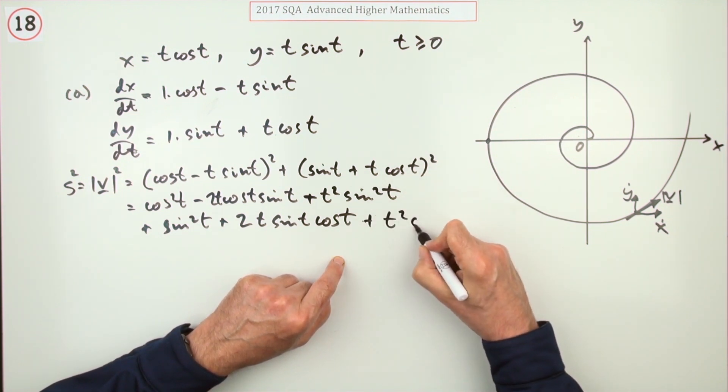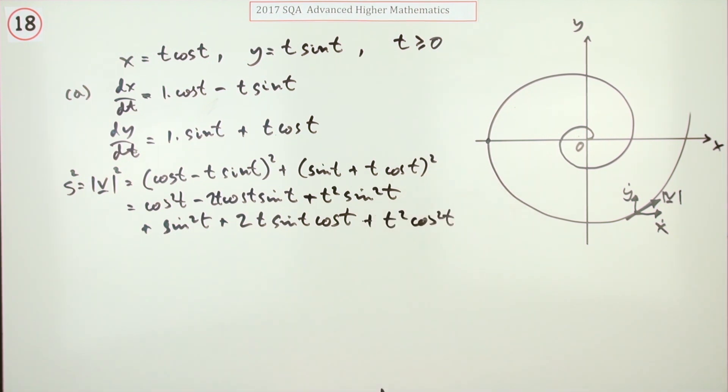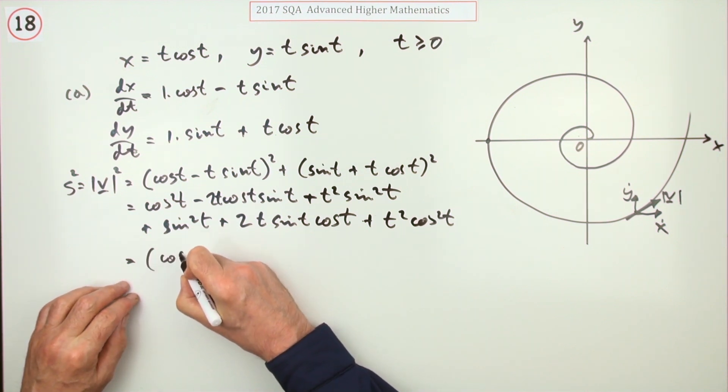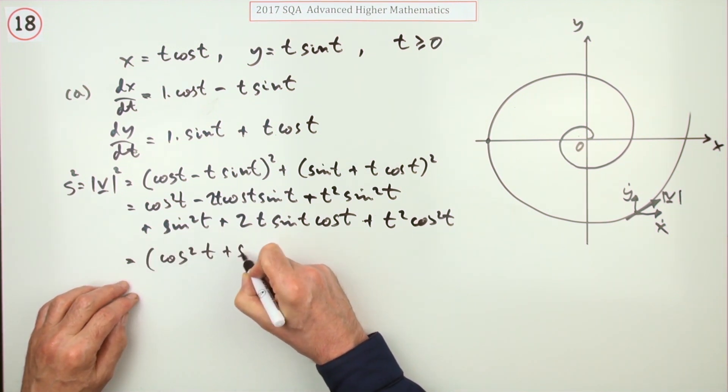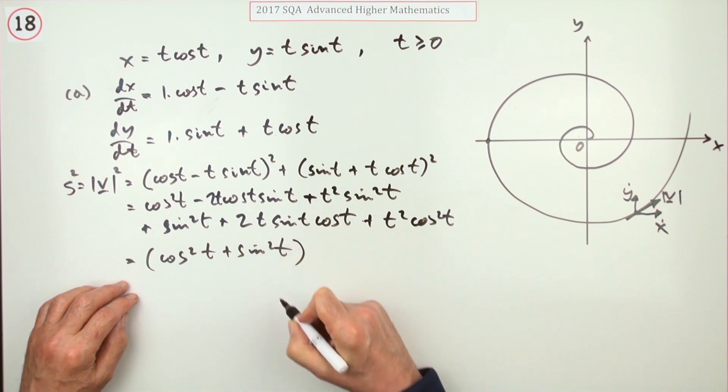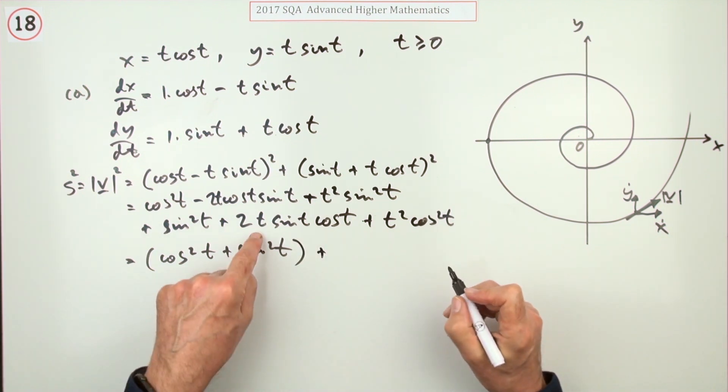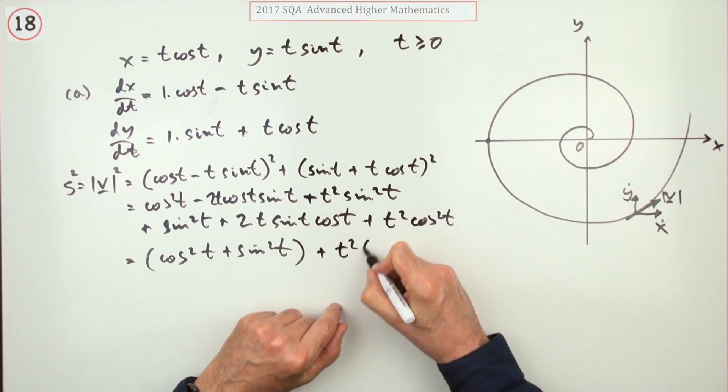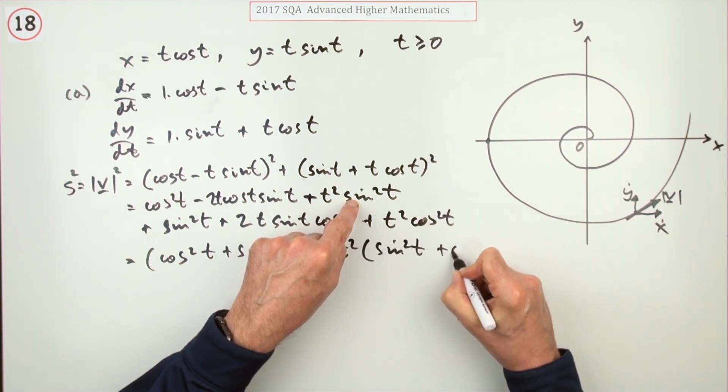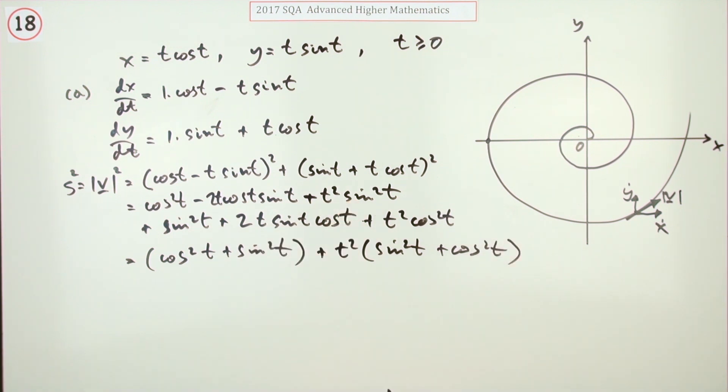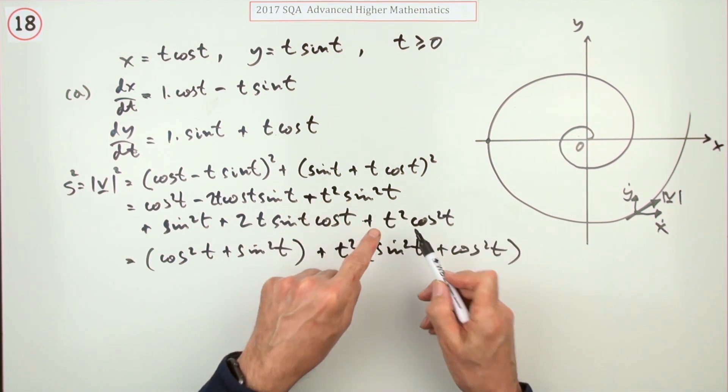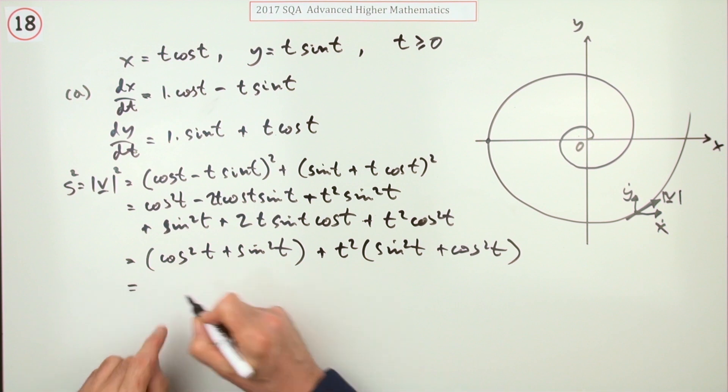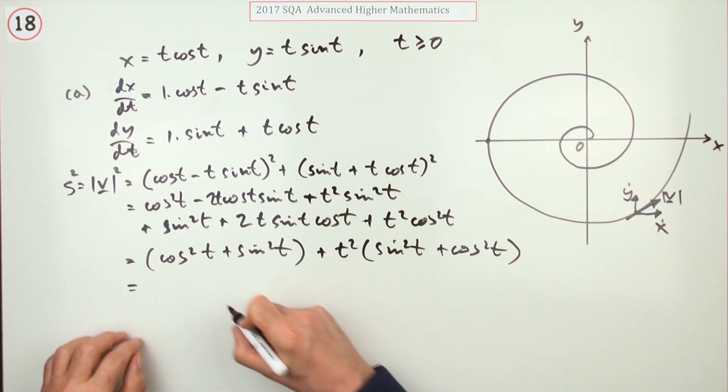Tidying that up, those two terms cancel—they pair off. I've got cos squared t plus sine squared t, and I've got t squared times sine squared t and cos squared t. Common factor: sine squared and cos squared makes one, so that just comes down to 1 plus t squared.